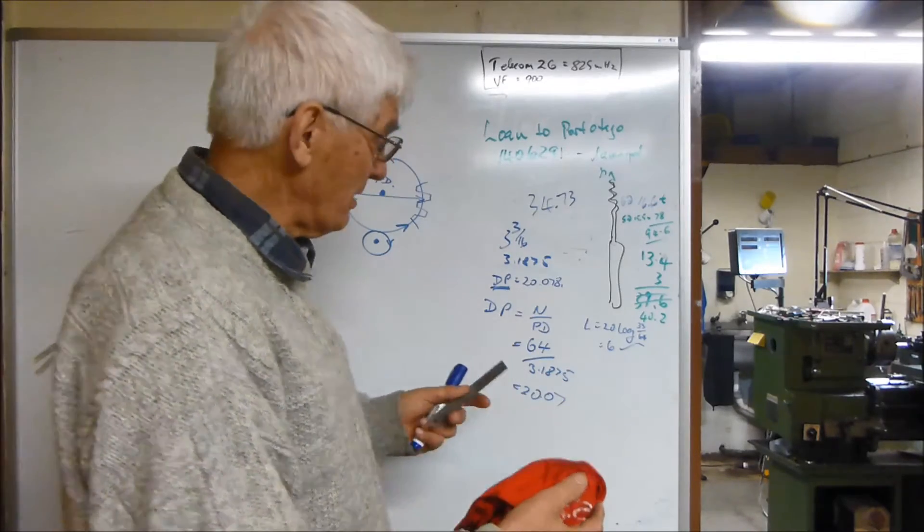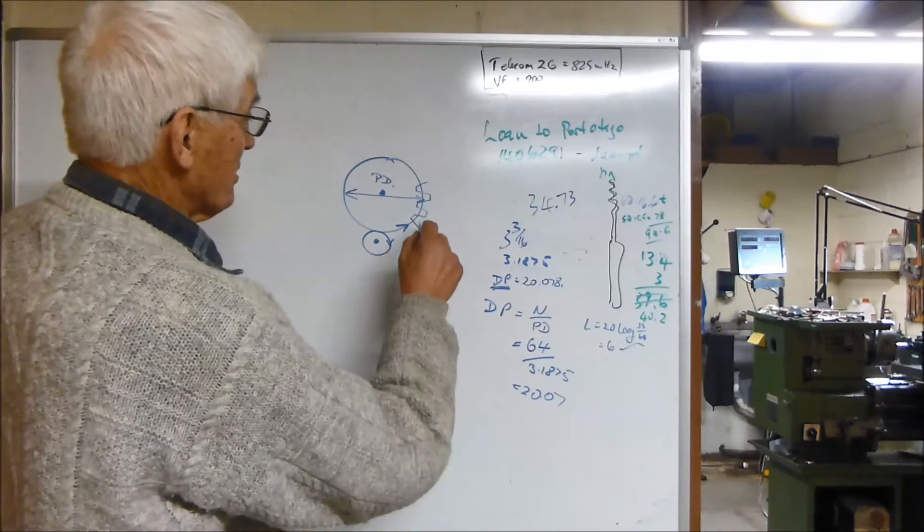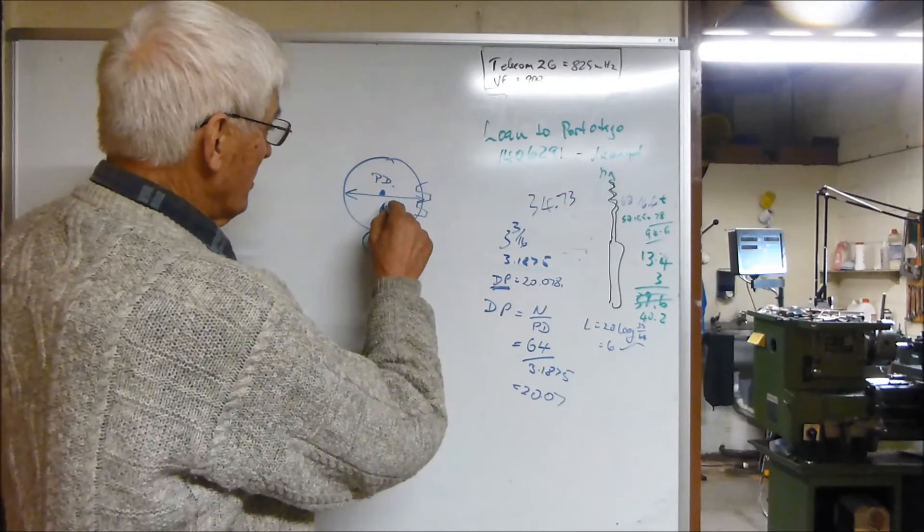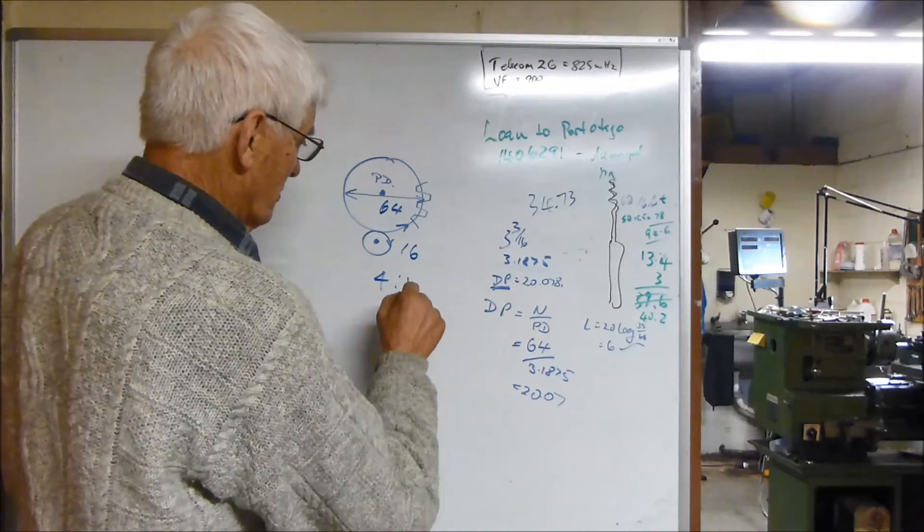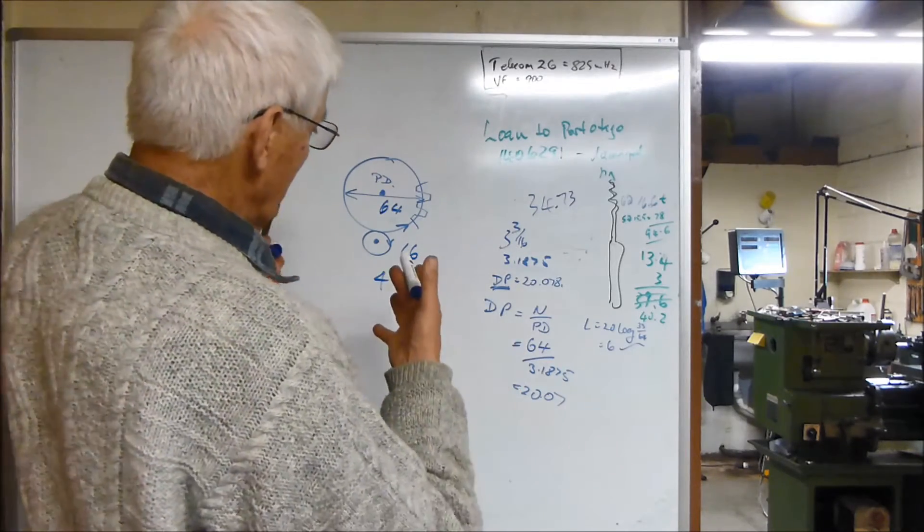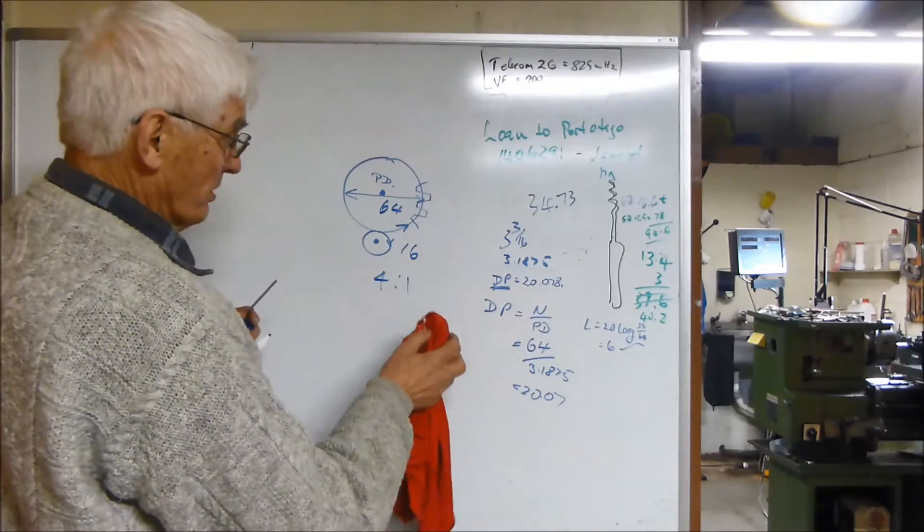Because I'm making both gears, it doesn't matter too much. Now the ratio that I've got at the moment is 64 teeth to 16, which is 4 to 1. And that is too fast, as we saw earlier.